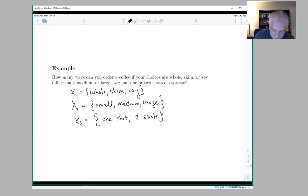And so a type of coffee corresponds to an element of X1 cross X2 cross X3. For example, whole, small, one shot. And by the multiplication principle, the number of elements in this Cartesian product is 3 times 3 times 2, which is 18.